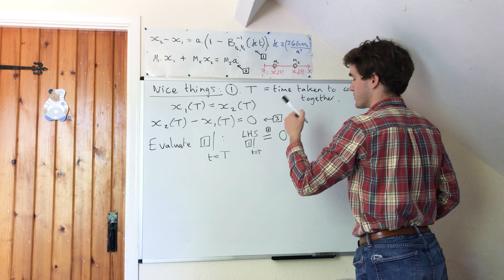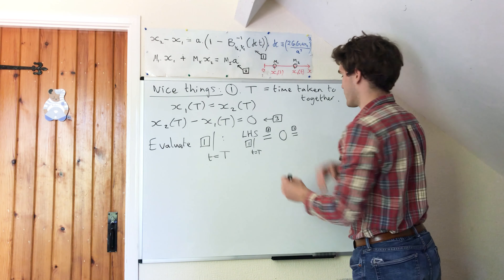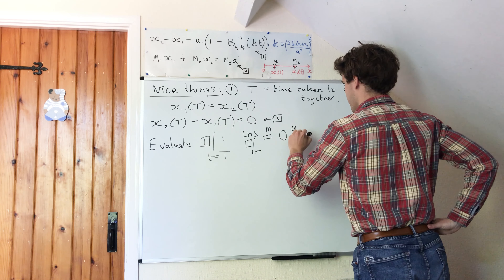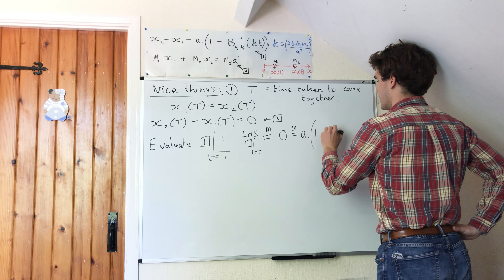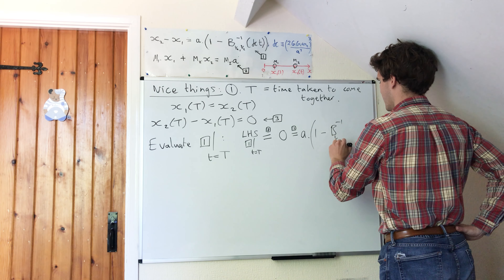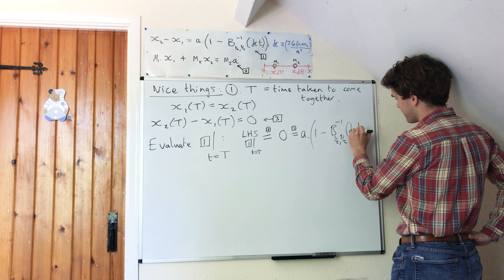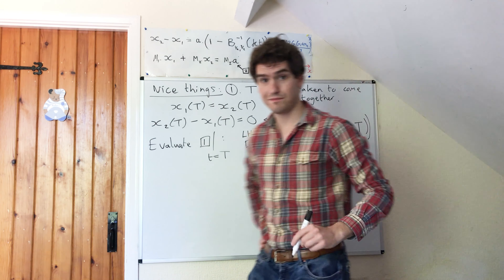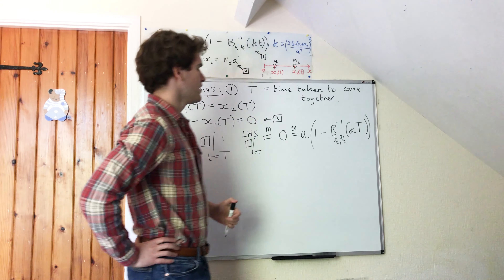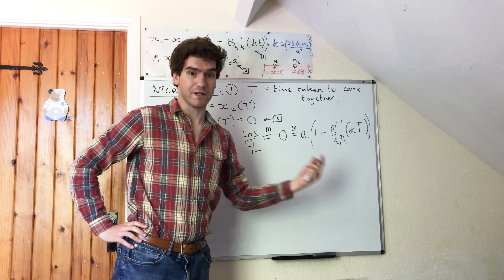And of course, this will by equation one be equal to the right-hand side of equation one when evaluated at big T. When equation one is evaluated at big T, we get a times one minus the inverse incomplete beta function, half three over two, of kappa times big T.